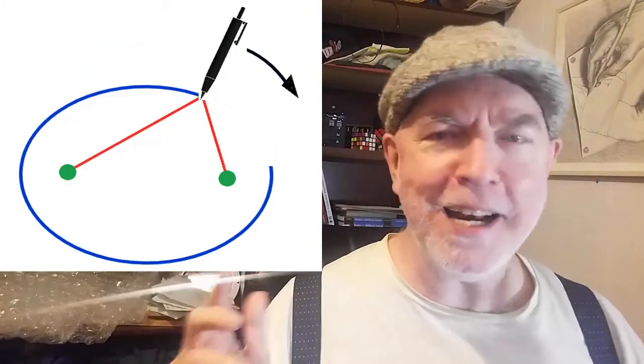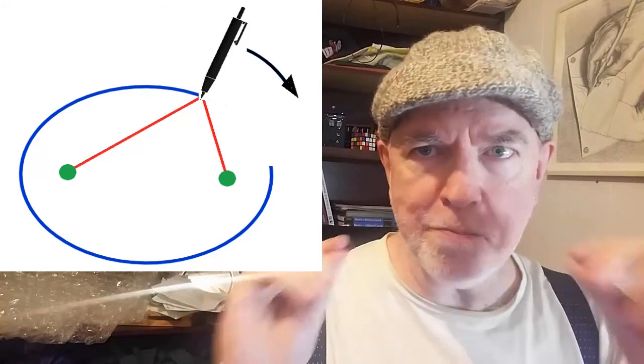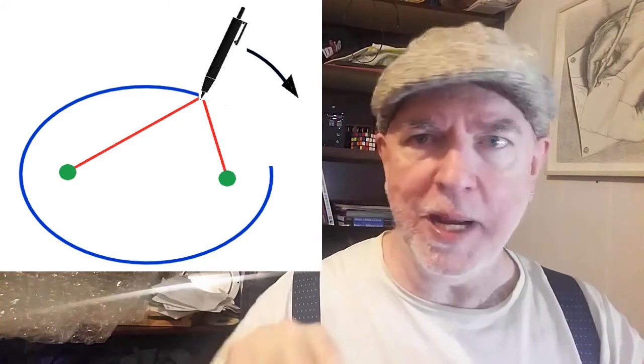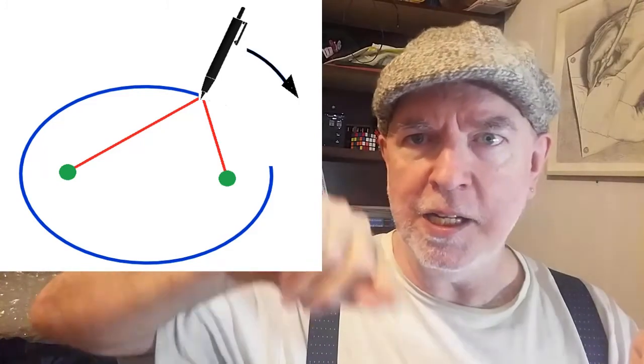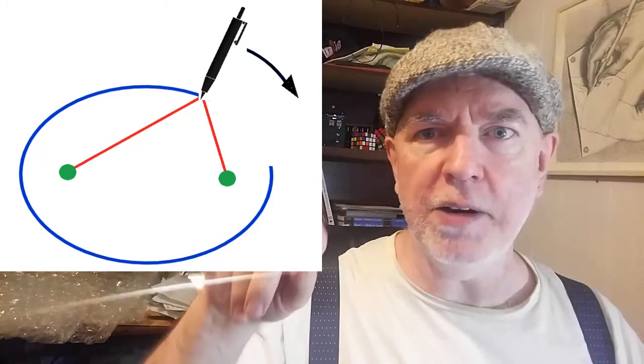We can use that definition to construct an ellipse. Take two pins and put them into some thick paper, then tie a thread between the pins, put in a pen so that thread is taut, then trace out the ellipse.